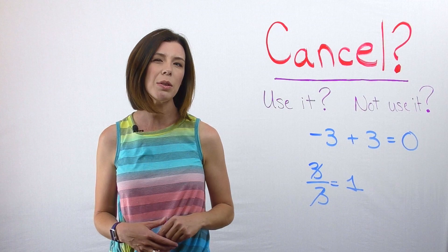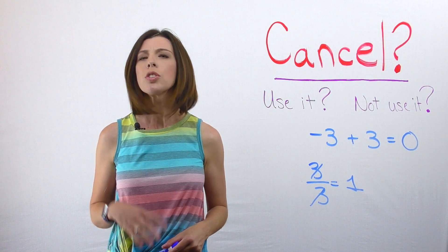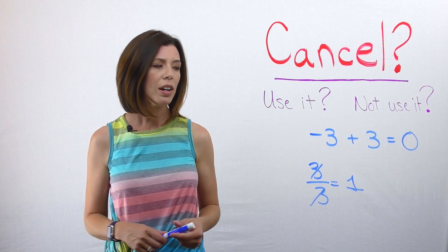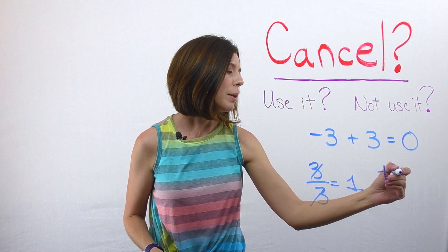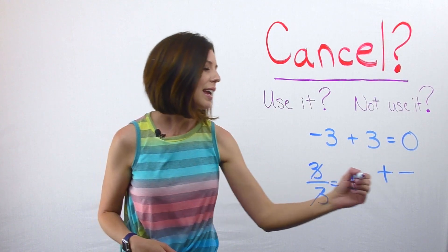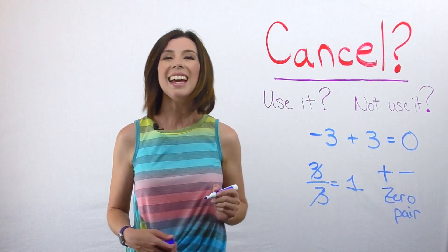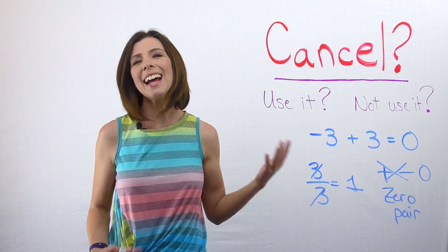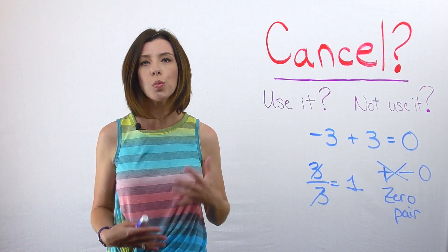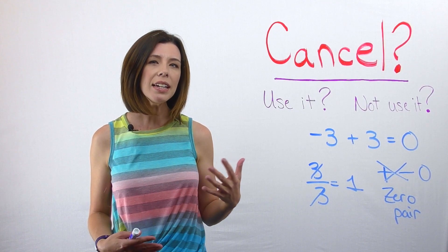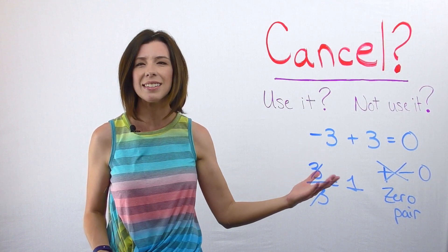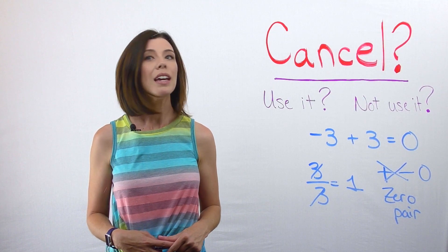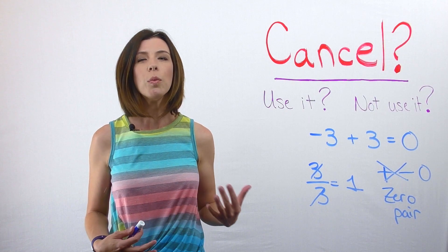Are we talking about something that equals 0? Are we talking about something that equals 1? So instead of using the word 'cancel' in integers, let's actually call them what they are. When we have a positive and we put a negative next to it, it really makes a zero pair. It does not cancel. We know that once this positive and negative make a zero pair, we can add it to anything and it doesn't change what we're starting with.